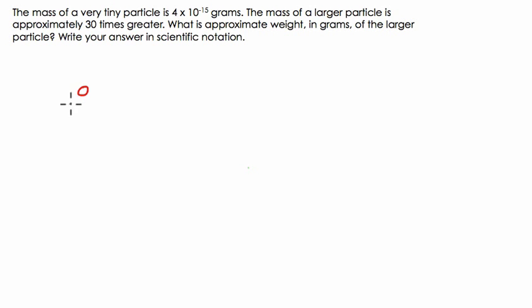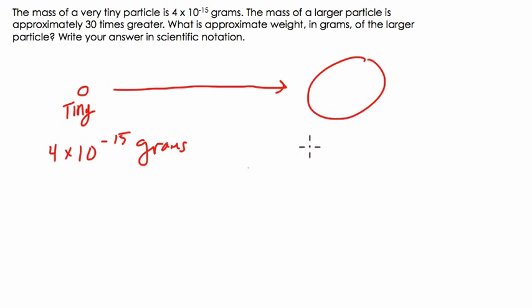We've got a tiny particle. This is our tiny particle. And we're told, in terms of weight, it's 4 times 10 to the negative 15th grams. Tiny, tiny particle. And this is not to scale, we have a bigger particle, right? This is the larger one, and we're told it's 30 times heavier or greater.